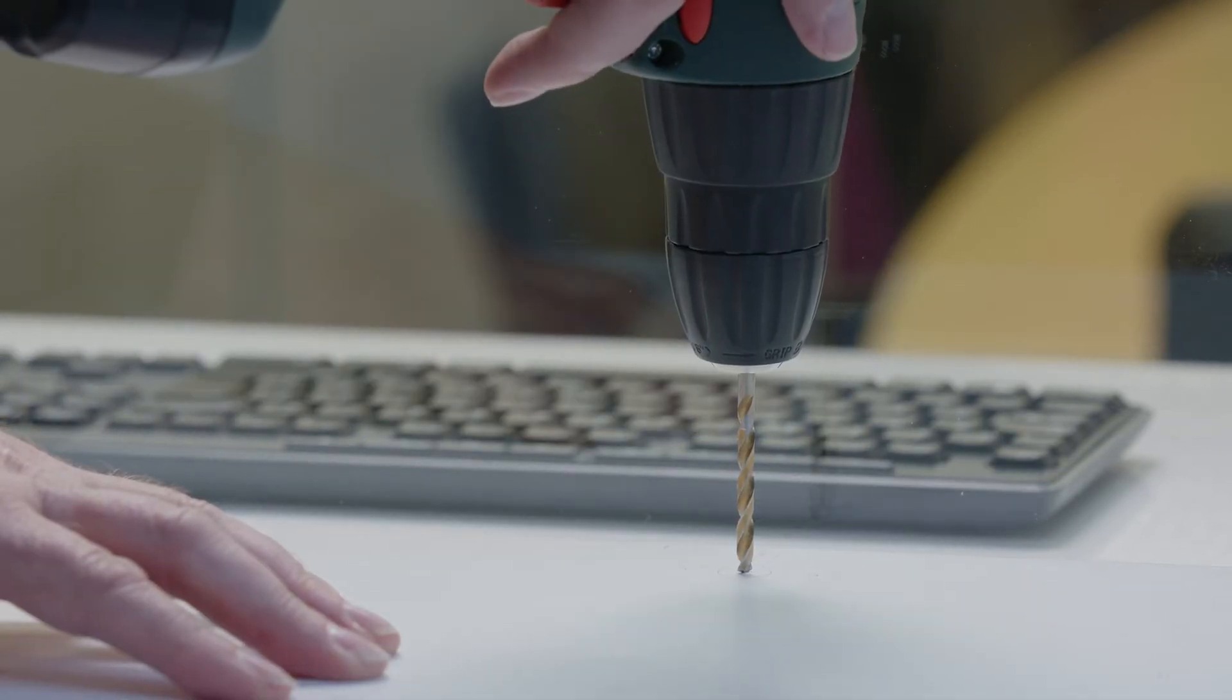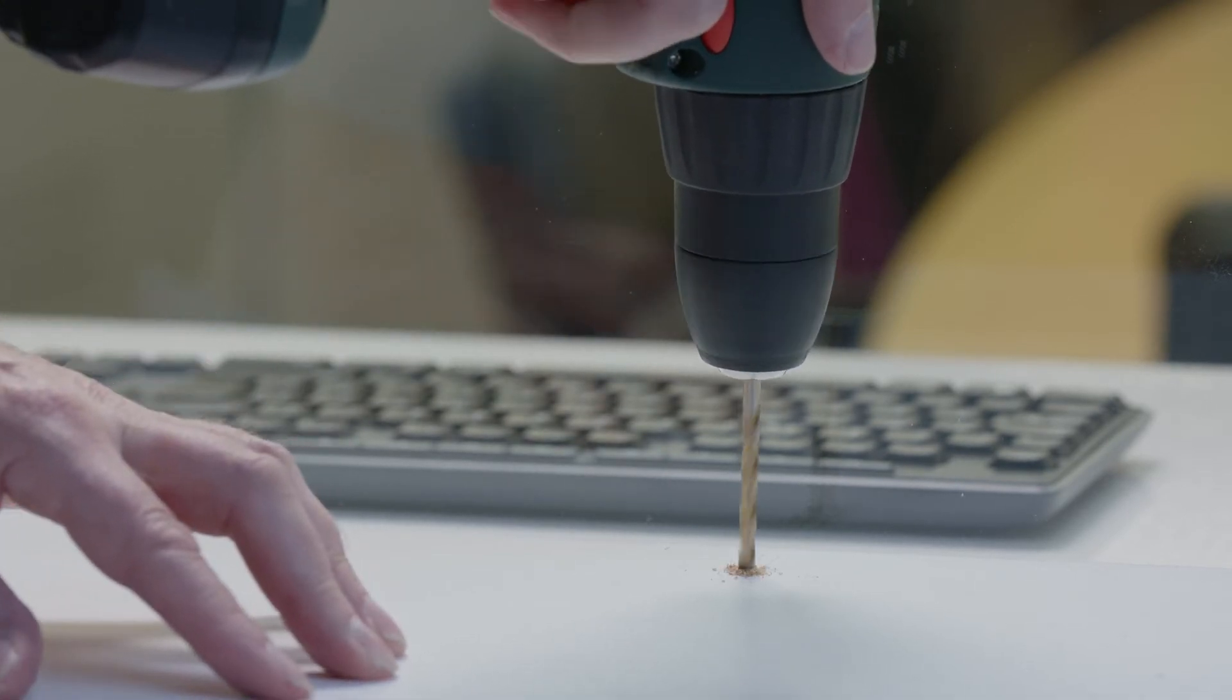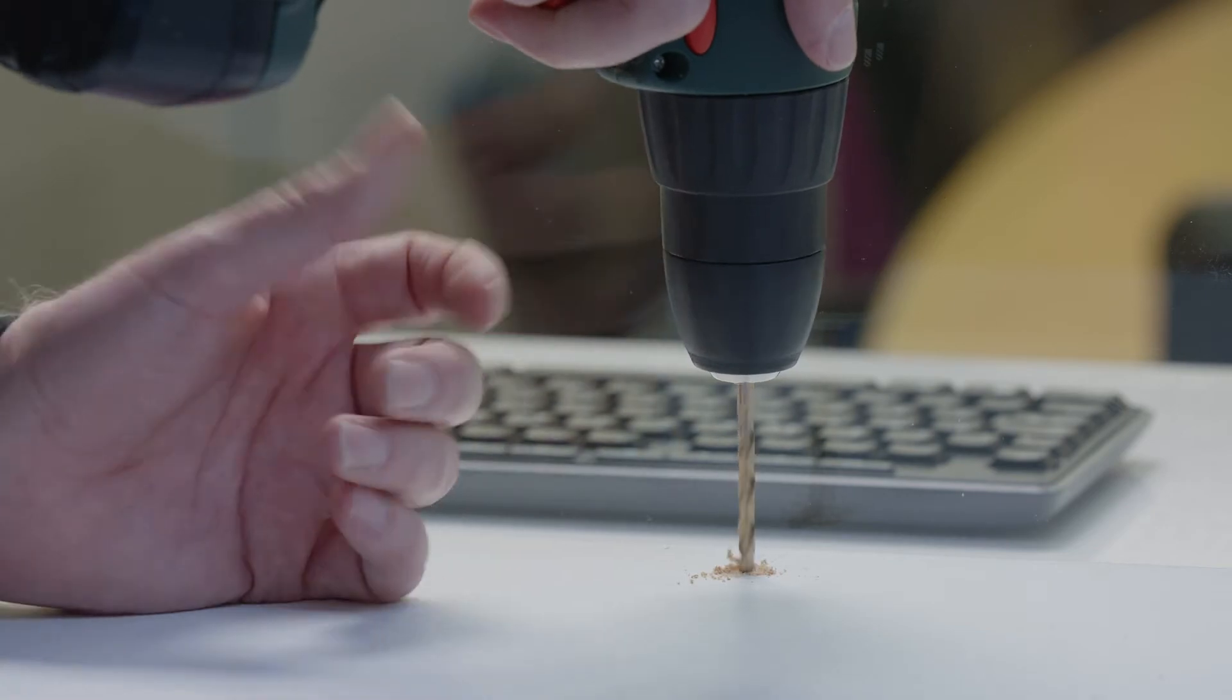Now, drill a hole for the cable in. A drill diameter of 6-7mm is recommended for the loudspeaker cable, and 4-4.5mm for the microphone cable.